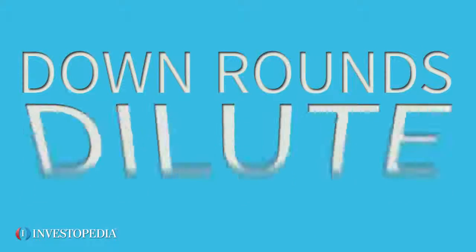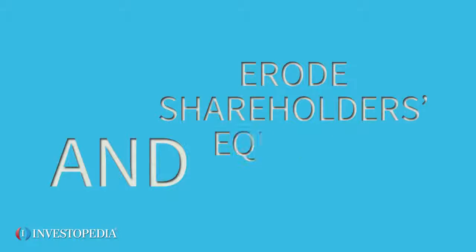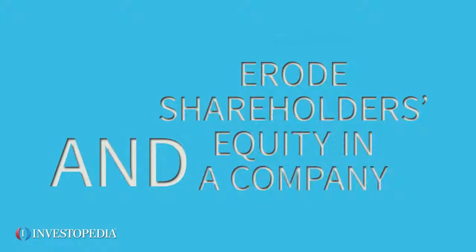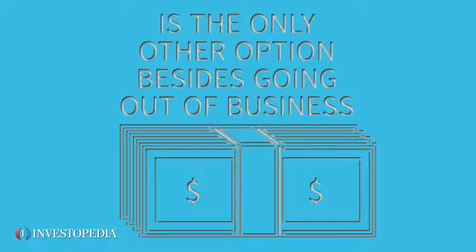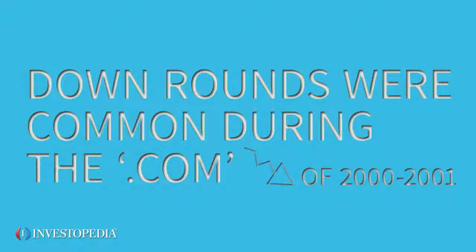Down rounds dilute existing share values and erode shareholders' equity in a company. But often a down round of financing is the only other option besides going out of business. Down rounds were common during the dot-com crash of 2000-2001.